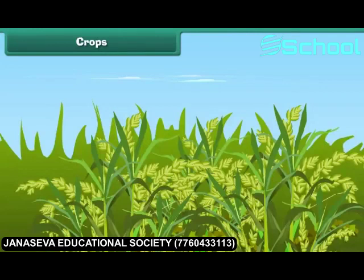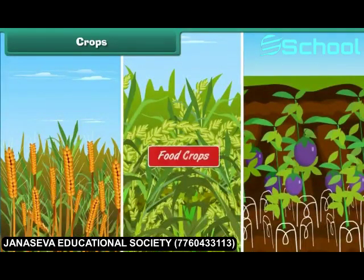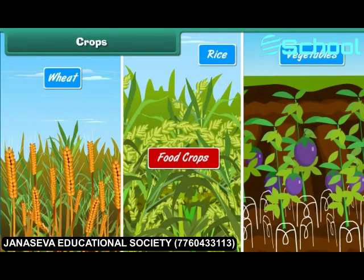Crops: Several plants which are grown in fields by farmers and are useful in various ways are known as crops. Crops are mainly of three types. Food crops — for example, wheat, rice and vegetables.